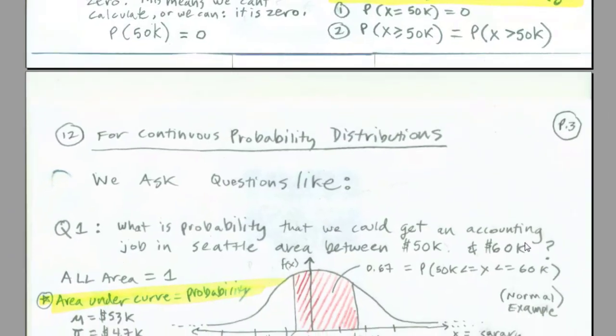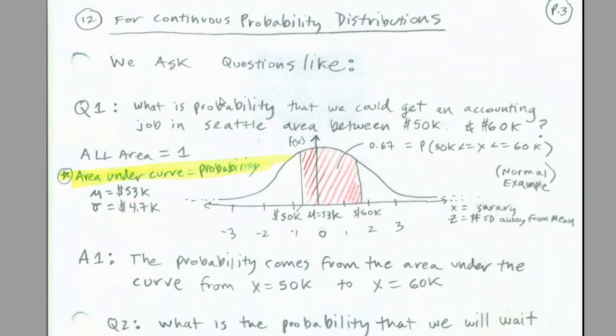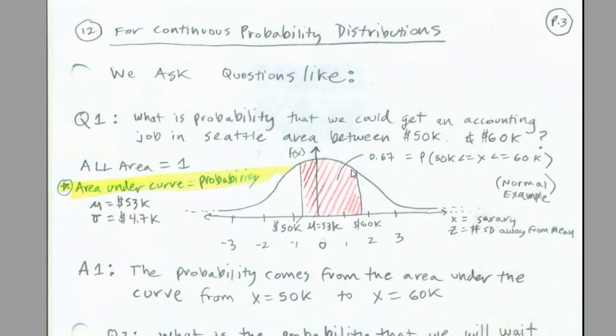Now let's look at three examples of what we're going to be allowed to do, one for each one of our distributions. For our normal or bell-shaped distribution, we're allowed to ask a question like, what's the probability we could get an accounting job in Seattle area between $50,000 and $60,000? The answer will come from the area under the curve, 67%.